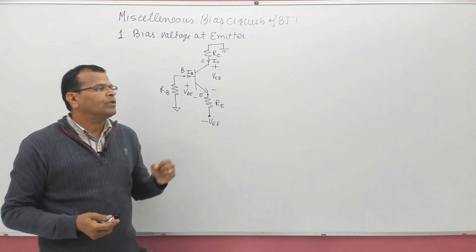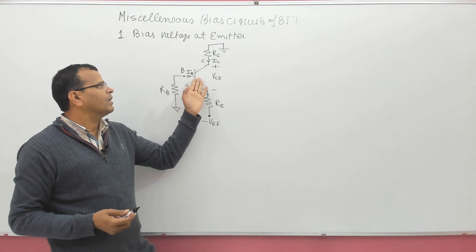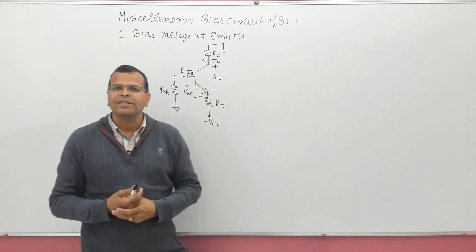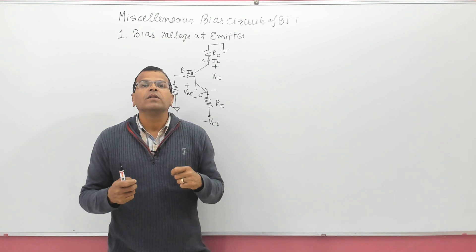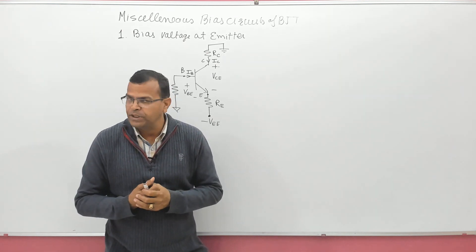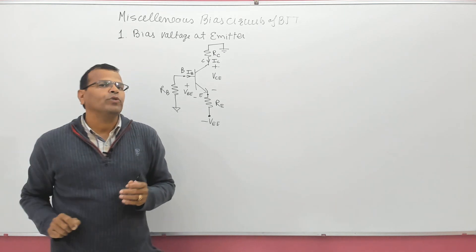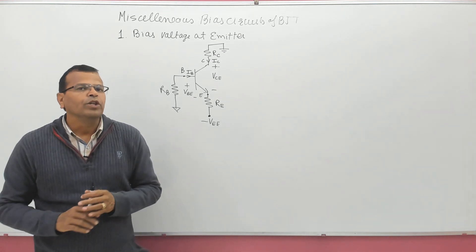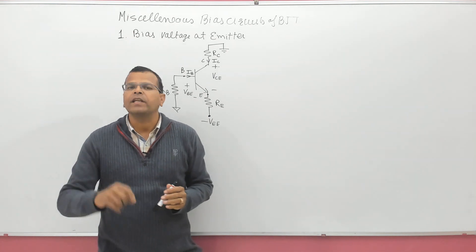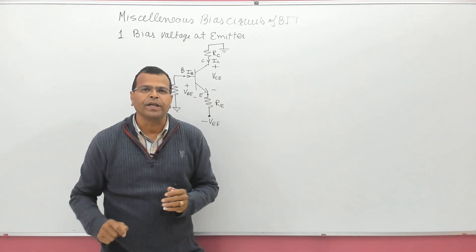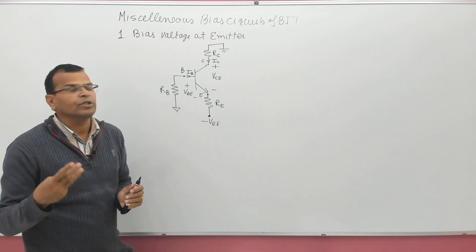The second type of question can be: you may be given all the resistances of the circuit and the gain of the transistor, and then you may have to locate the region of operation of the BJT — maybe saturation, cutoff, or active region. The third type of question can be: you may have to find the value of the collector current and voltage VCE, that is the operating point or Q point.